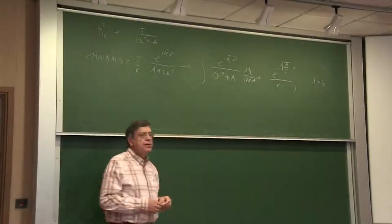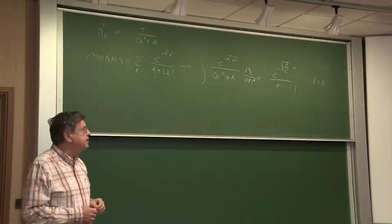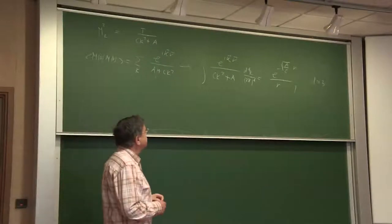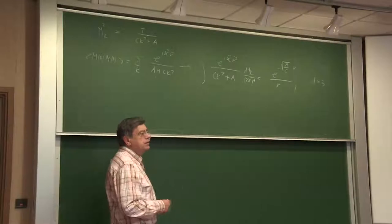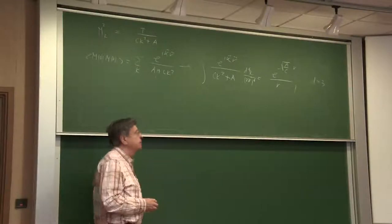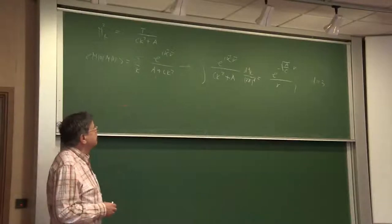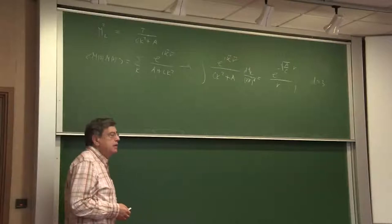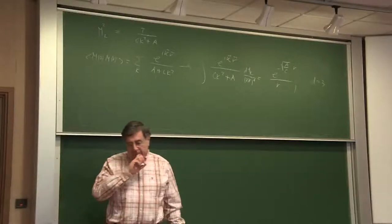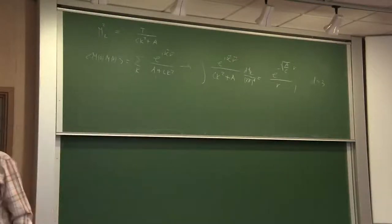This is the zeroth order, and we have shown that below the transition point, one comes to the long range order. Above, there are already fluctuations. Above one gets exponential behavior. That's the major difference between ordered and disordered phase.